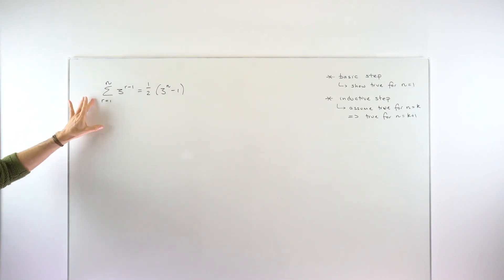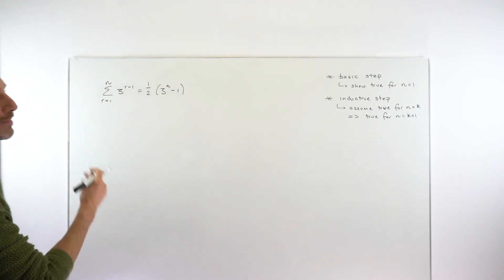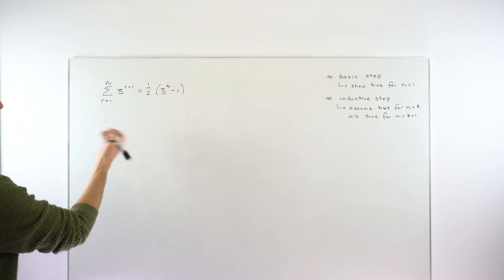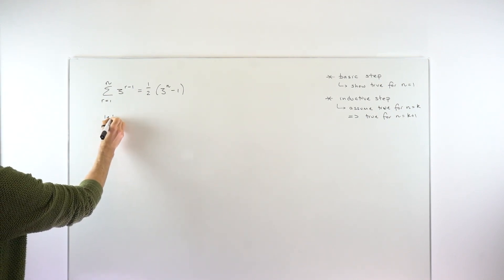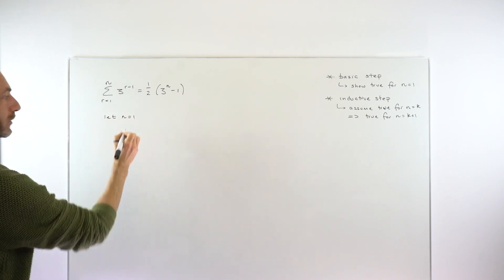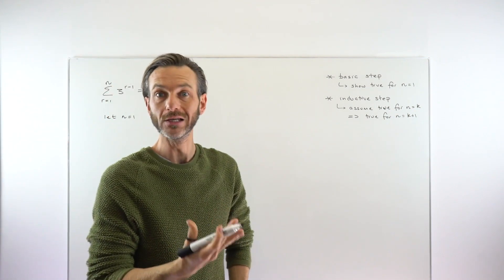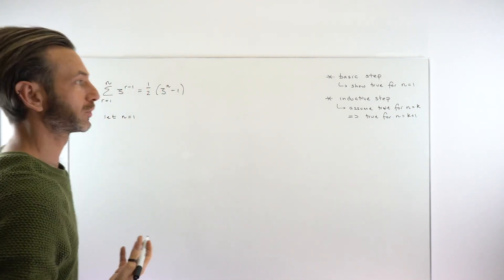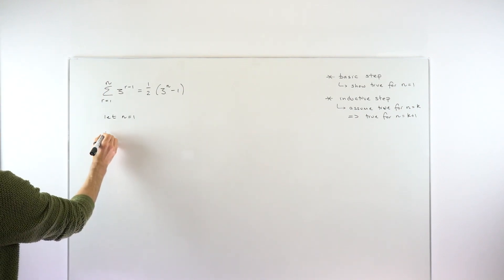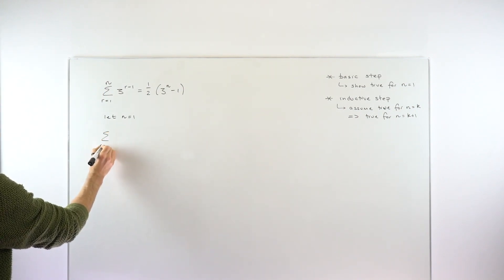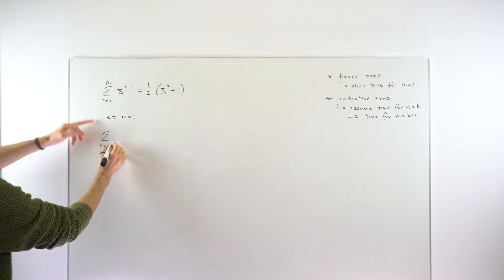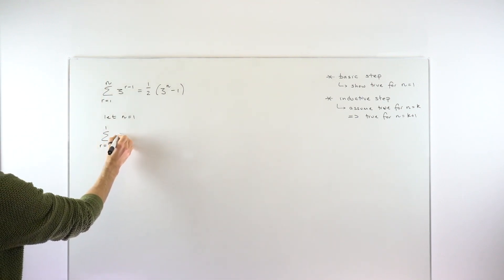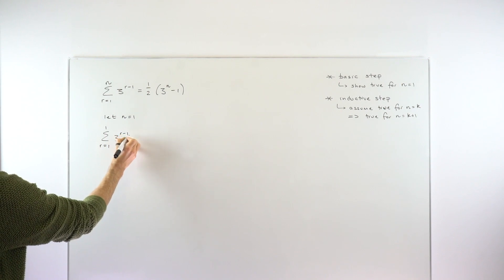So let's crack on and have a go at this one. We'll start with the basic step — you are just basically plugging in the value. In the basic step, we're going to let n equal 1 because that is our first case. We want to work out the sum from r equals 1 to 1 of 3 to the power of r minus 1.